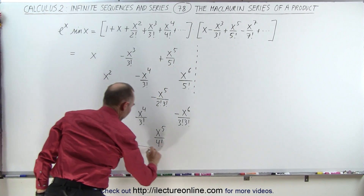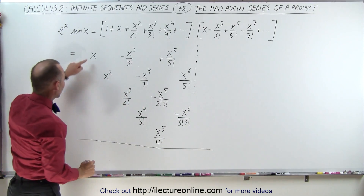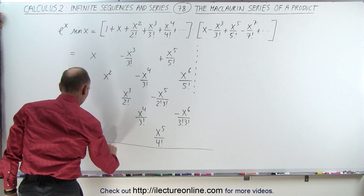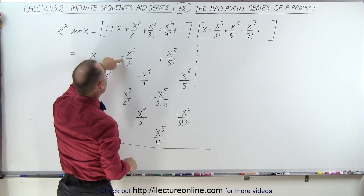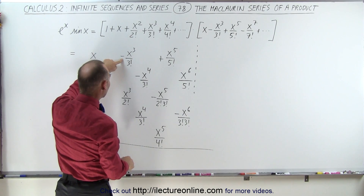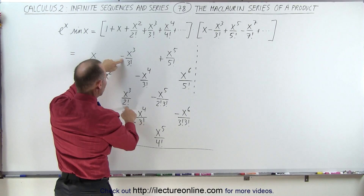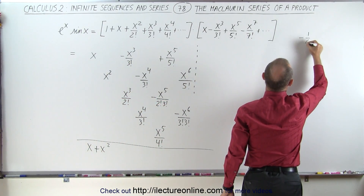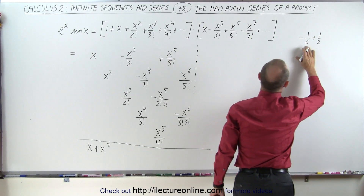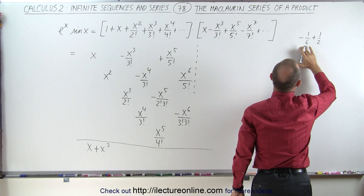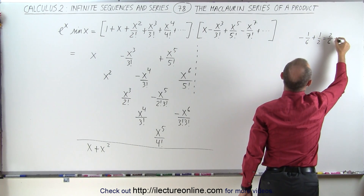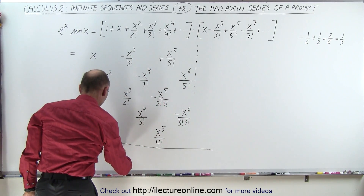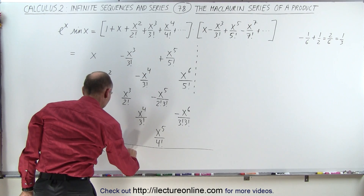Now we can add all those terms together. We end up with an x. Here we get a plus x squared. For the x cubed terms we have minus x cubed over 6 plus x cubed over 2. So doing the arithmetic: minus 1 sixth plus 3 sixths equals plus 2 sixths, which equals 1 third. So when we add these two together we get a plus 1 third x cubed.